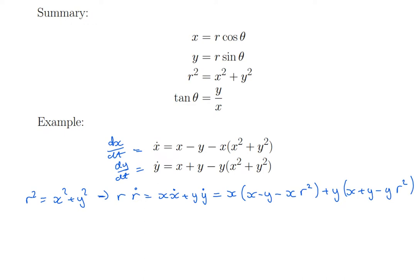Now, in the first term, I have a minus x y. And in the second term, I have a plus x y. So they will cancel. Then I have an x squared plus, here I have an x squared. Here I have a y squared. x squared plus y squared is r squared.